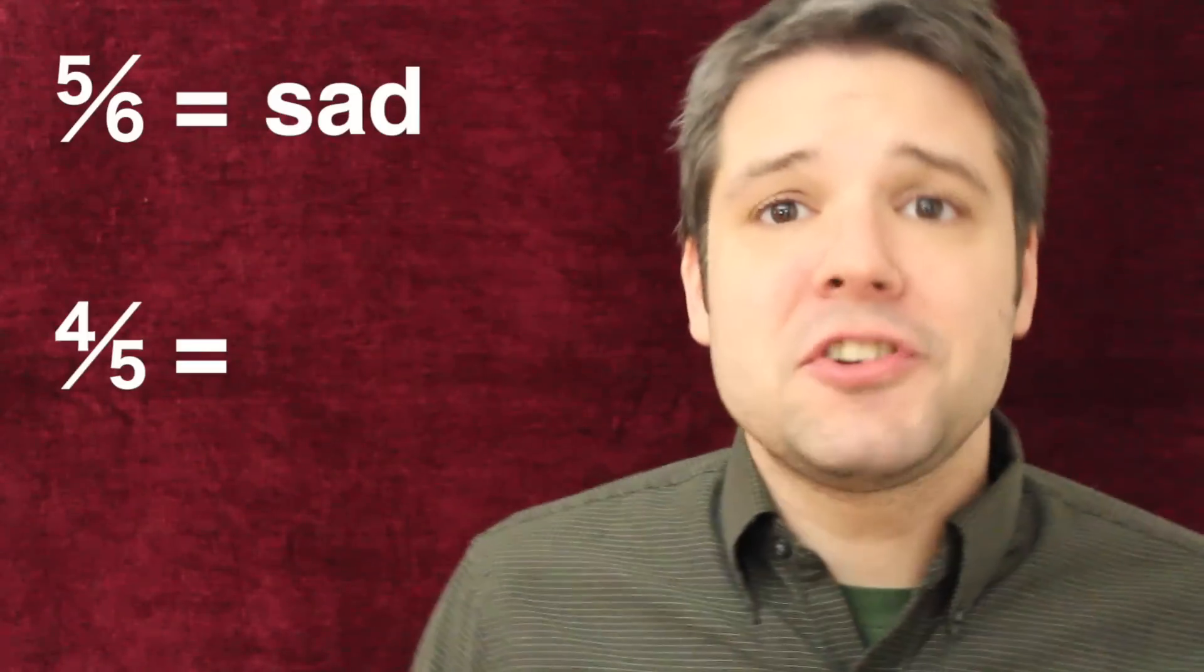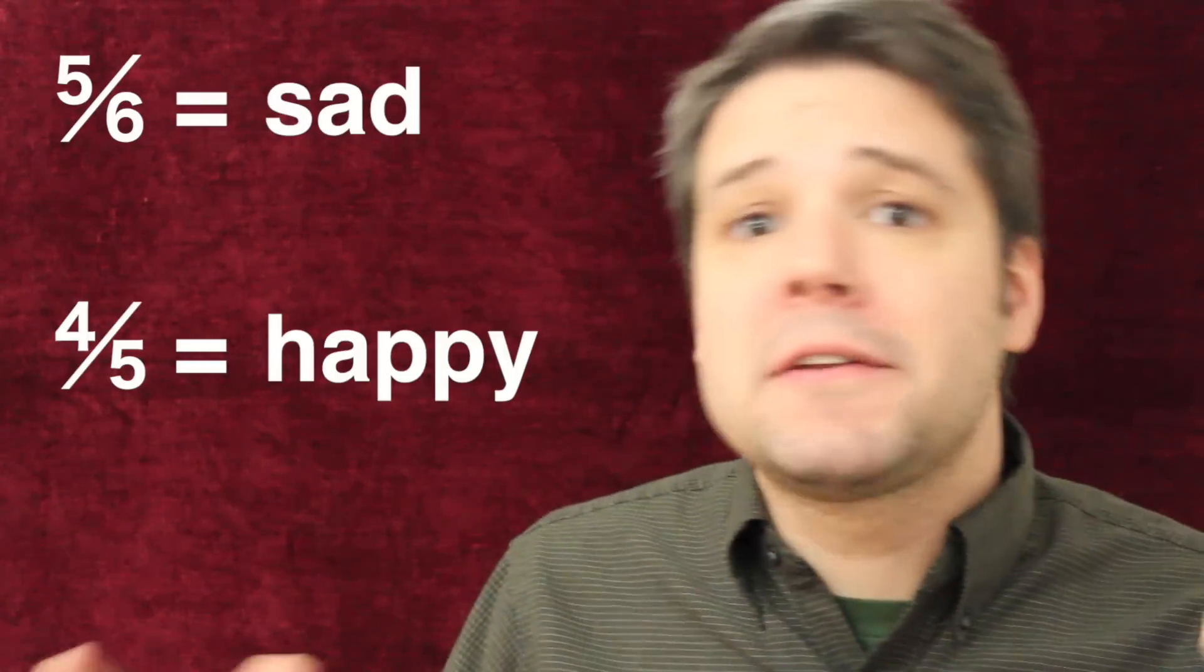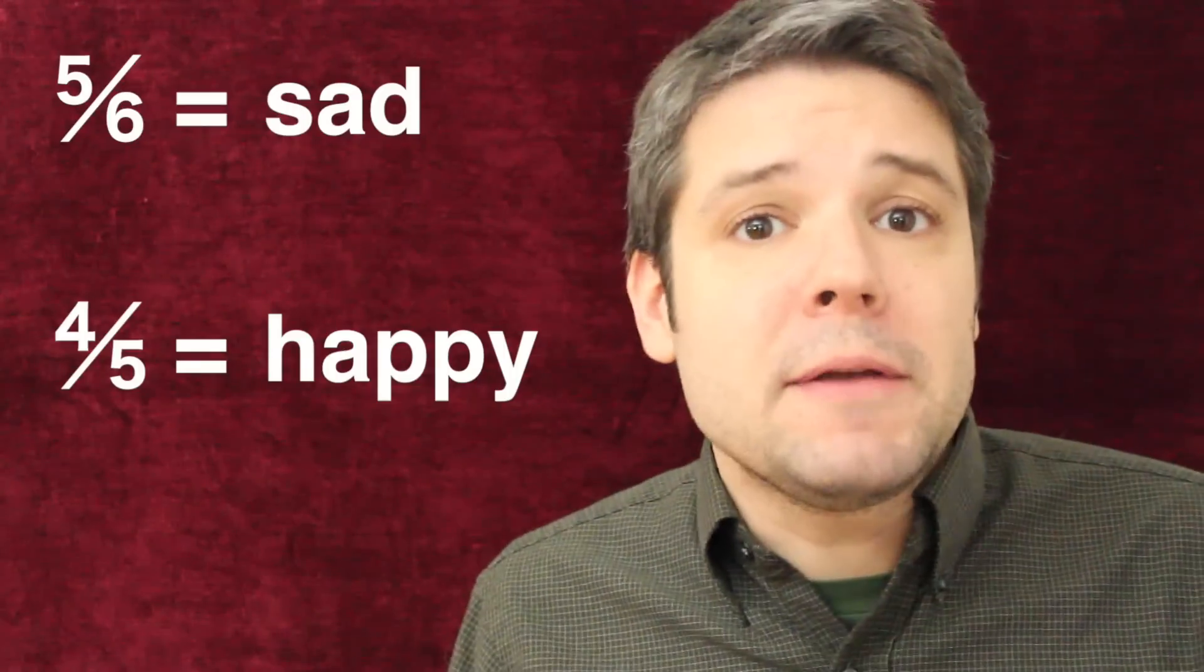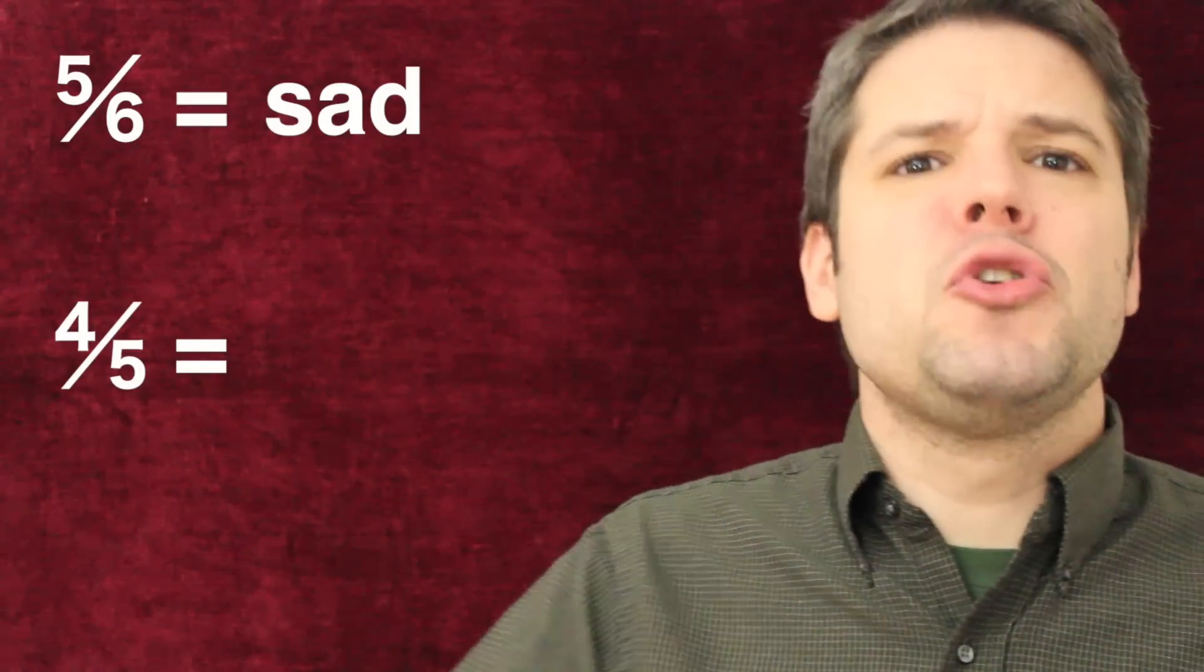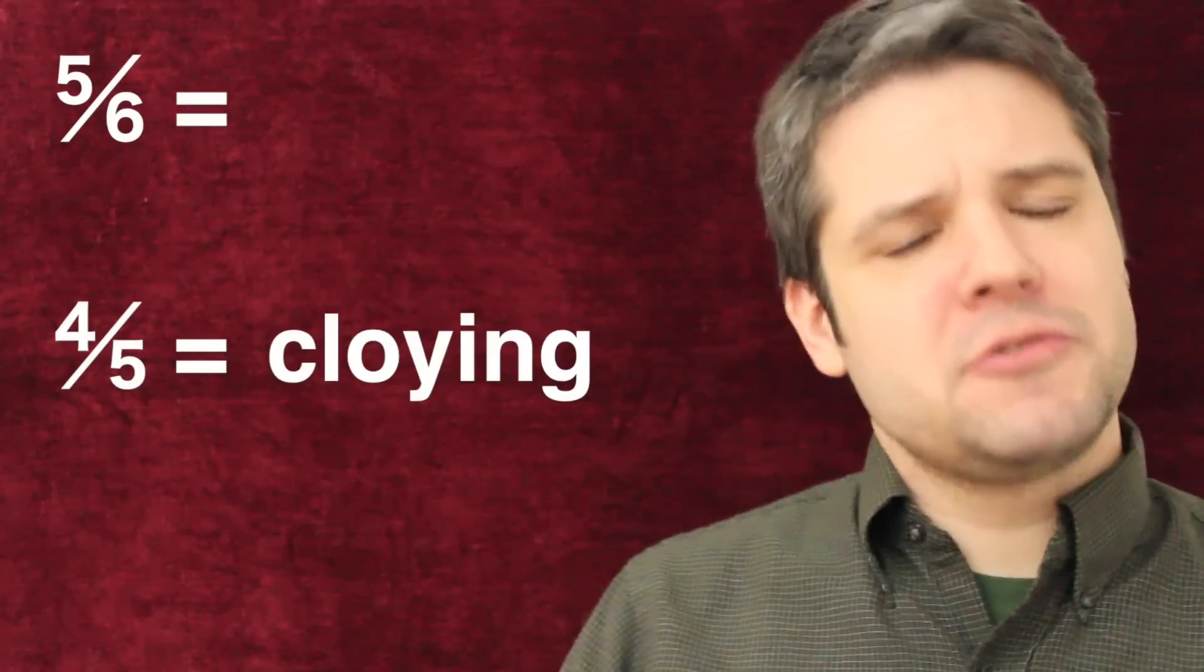That emotional distinction you heard in the middle, lots of people describe the five sixths ratio as sad and the four fifths ratio as happy. They might vary a little bit in the words they use to describe it. Instead of happy, you might use cloying. Or instead of sad, you might use the word sincere. But an emotional distinction between these two ratios appears to be a common characteristic to humans.